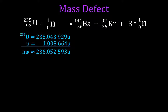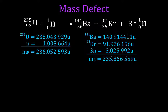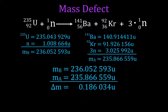We're going to do the same thing for the right-hand side. We have barium, krypton, and three neutrons — so 3n is three times the atomic mass unit value for the neutron. We add those up, and the total mass on the right-hand side is 235.866559 atomic mass units. The mass on the left is more than the mass on the right, which means we have a mass defect. We're missing mass. Subtracting the two values gives us a mass defect of 0.186053 atomic mass units.